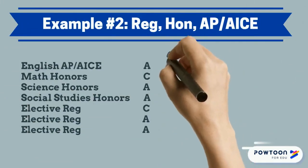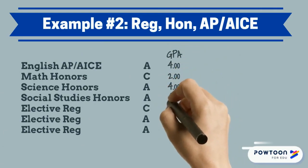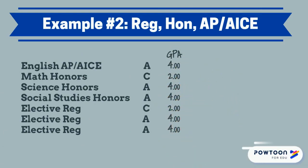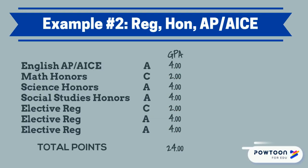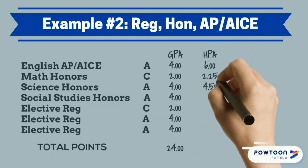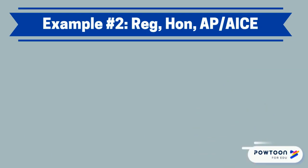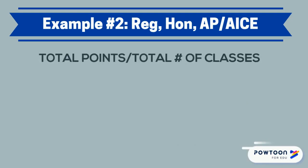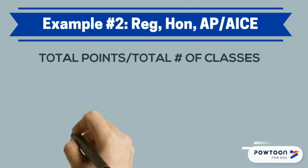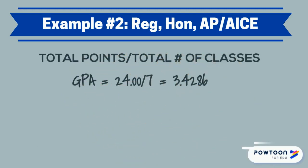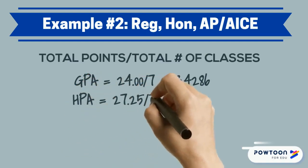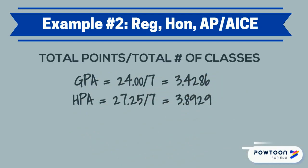In this example, the student is taking courses at the regular, honors, and AP/ACE levels. To calculate their unweighted GPA, all grades are converted to points using the four-point scale. However, when calculating their HPA, we use the weighted scale — so the A earned in AP/ACE English is given six points, and the A earned in science honors is given 4.5 points. The points are totaled and divided by the total number of classes. For the GPA, this student earned 24 points; divided by seven, their GPA is 3.4286. For the weighted HPA, they earned 27.25 points, which when divided by seven gives them an HPA of 3.8929.